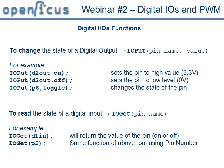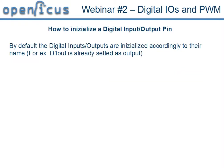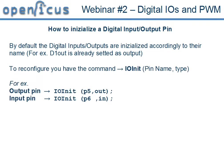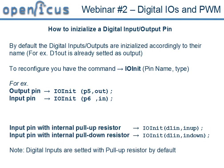By default we have five digital inputs and five digital outputs, but sometimes we may want a different number of IOs. In this case we can use the command IOINIT, specifying the pin number or pin name — for example P5 or P6 — and the functionality: OUT, IN, or if we want to enable the pull-up or pull-down resistors, IN_UP or IN_DOWN.